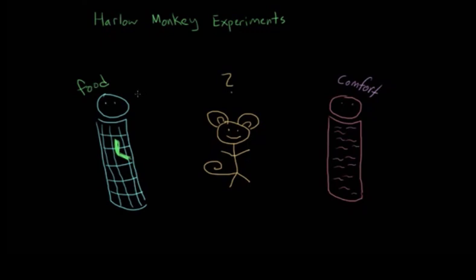On the other hand, if you think that attachment is based on things like comfort, then you would assume that the monkey would spend most of its time around the cloth mother. This is the mother that has the soft blanket and can provide contact comfort.